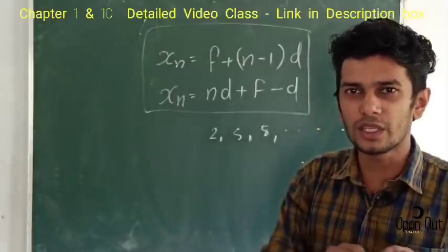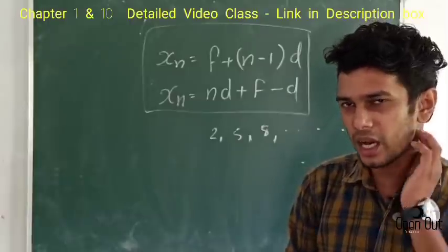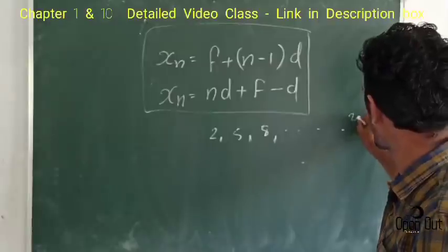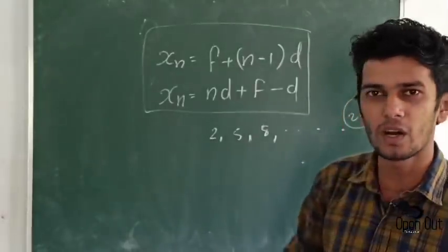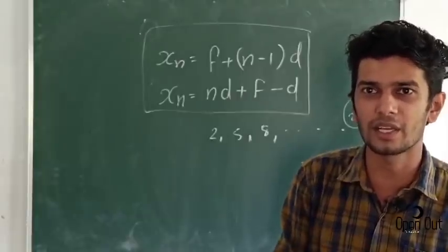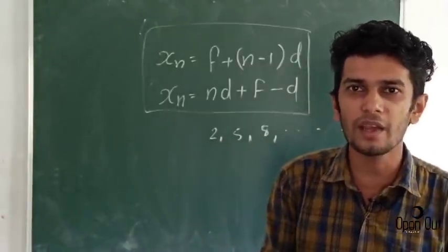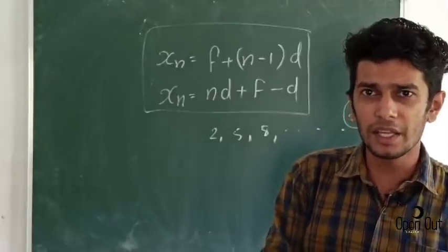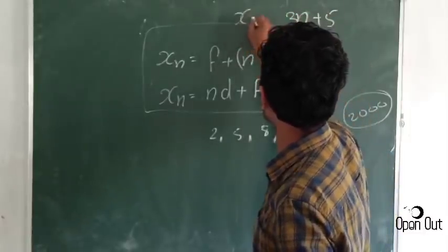We have to ask another sequence in the chapter. We have to ask about the question. This is one question. Because of the second question, we are going to ask about a second question in this sequence. The first question is: we can find a way to solve the problem.